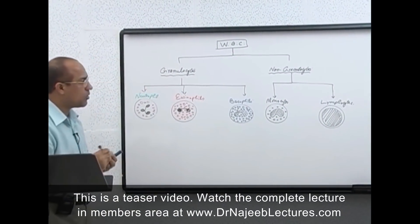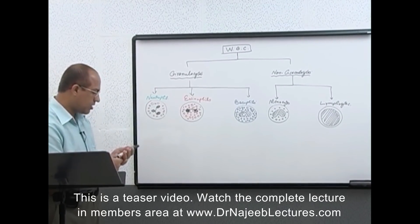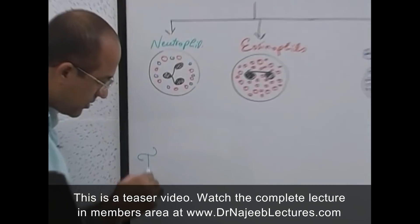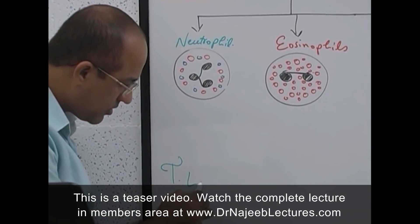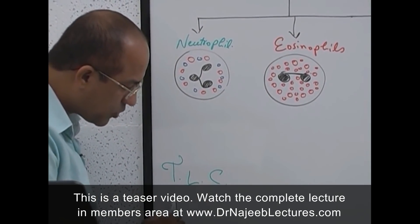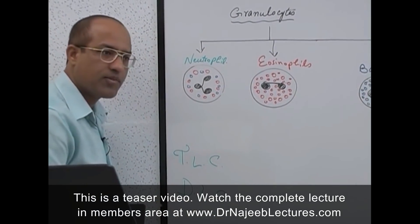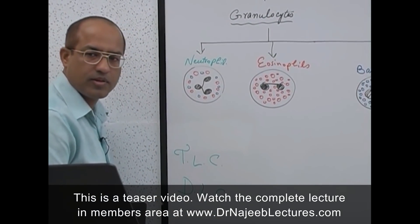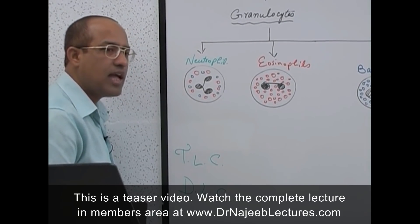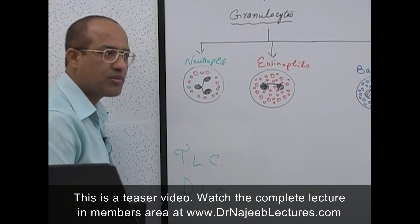Now let's discuss two important concepts. TLC stands for Total Leukocyte Count, and DLC stands for Differential Leukocyte Count. Total leukocyte count means the total number of white cells in one milliliter — or one cubic millimeter — of blood.